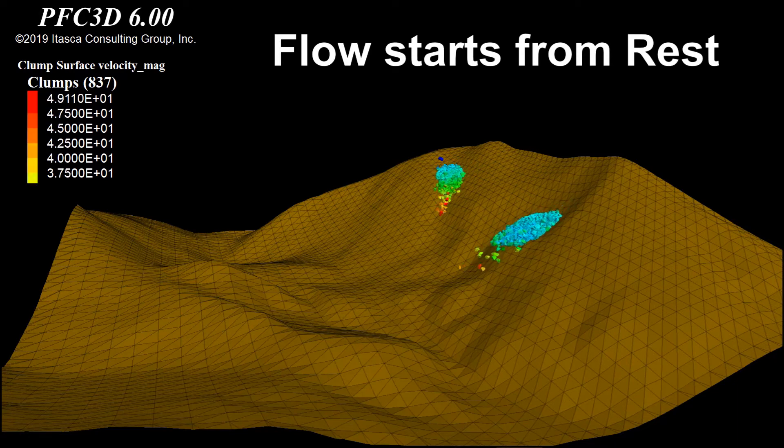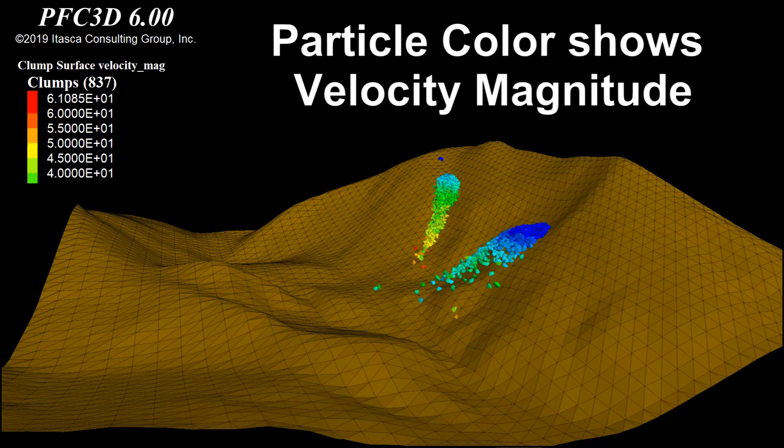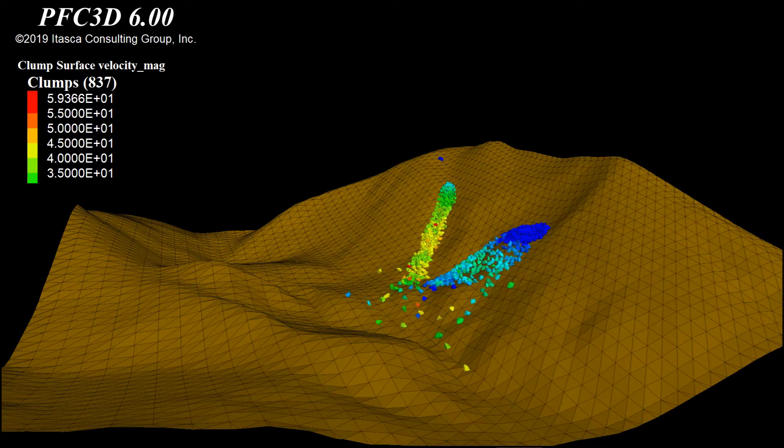The particles are colored according to their velocity. As the simulation proceeds and the values of velocity change, the color of the particles shown in the simulation also changes.